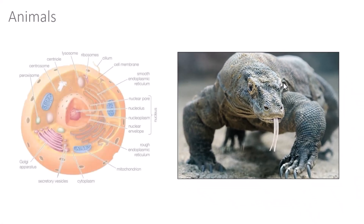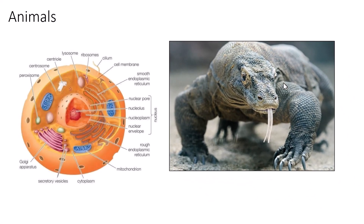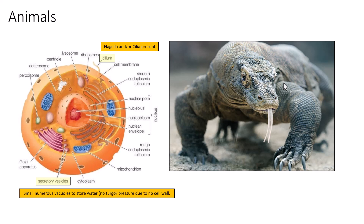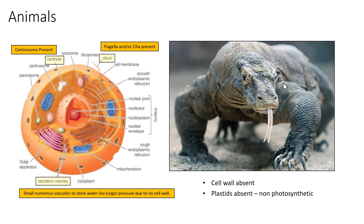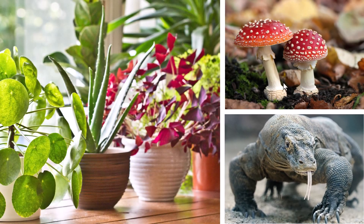Animal cells do not contain a cell wall, giving them a more rounded, less rigid shape. They have cilia or flagella for movement, associated with basal bodies. They have secretory vesicles and vacuoles that are numerous but do not cause turgor pressure, since there is no cell wall. Animal cells have centrioles producing a centriole-based centrosome, allowing efficient cell division. They lack plastids, are non-photosynthetic, and are heterotrophic.